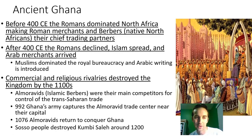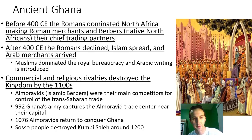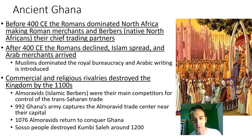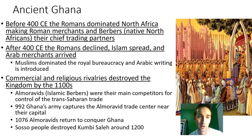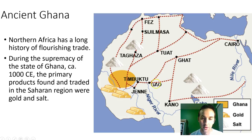Commercial and religious rivalries started to destroy the kingdom by the 1100s. The Almoravids — North African Islamic Berbers — were the main competitors for control of the trans-Saharan trade across that massive desert. In 992, Ghana's army captured the Almoravid trade center near their capital, but in 1076 the Almoravids returned to take Ghana. Then the Soso people destroyed the capital at Kumbi Saleh around 1200. It was this change in trade and competition for gold that really caused the fall, as kingdoms fought over trade networks and major cities like Timbuktu and Gao.